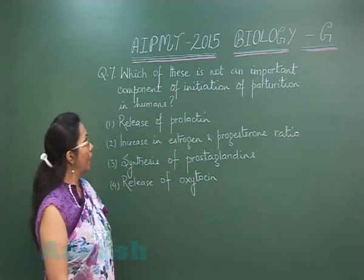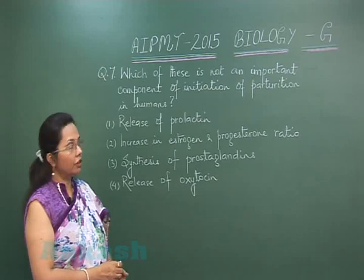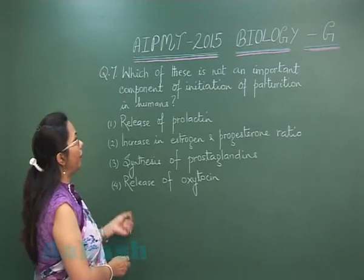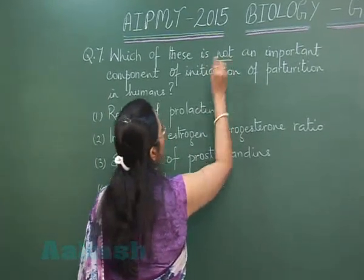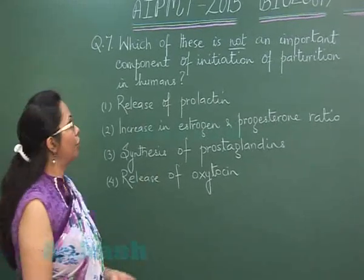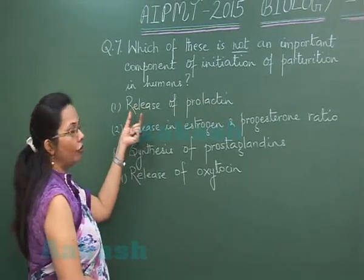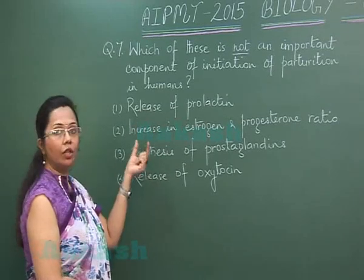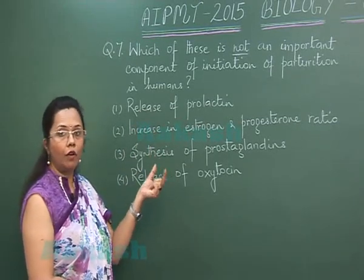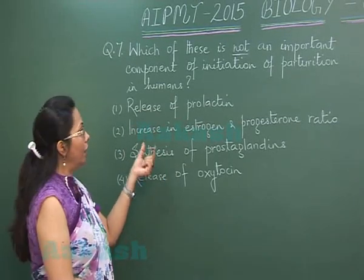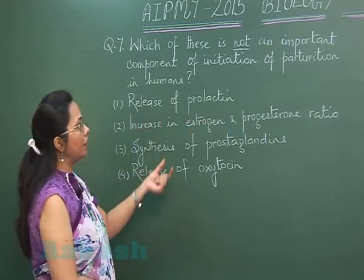Question 7. Out of these 4 factors, we have to find which is not important for parturition. The release of prolactin is released after parturition for the release of milk to nourish the young one.